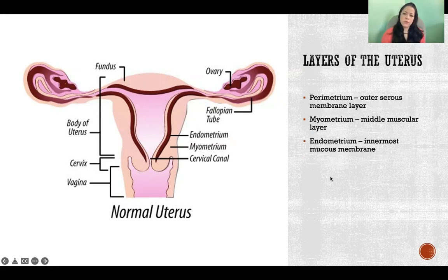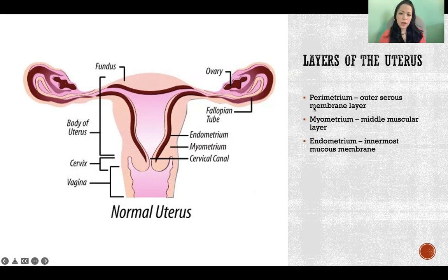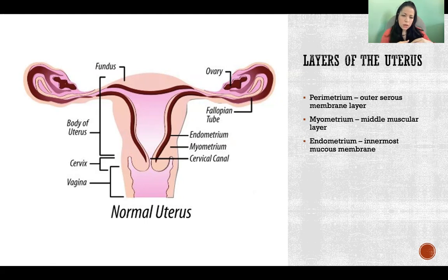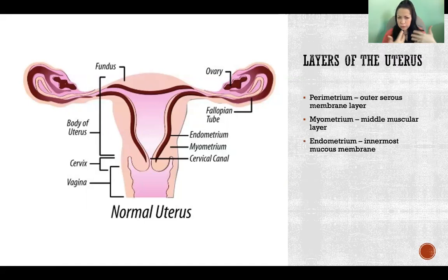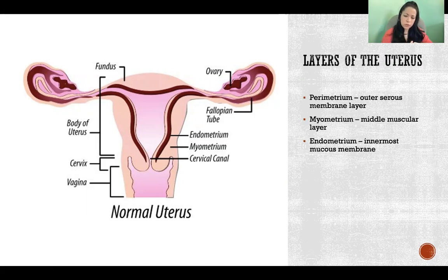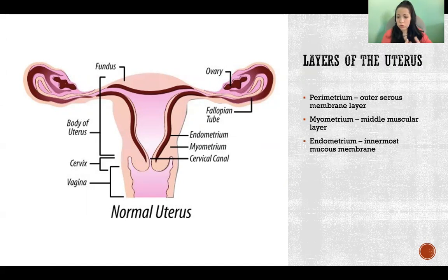The layers of the walls of the uterus: we have three layers. The parametrium — like 'perimeter' — that's the outside layer, the outer serous membrane layer. Most of our visceral organs have a serous membrane on the outside. It's like a mucus membrane, but the fluid is more slippery and less sticky because the purpose is to reduce friction. We secrete this slippery fluid so that when another organ rubs against the uterus, we're not creating friction and there's no injury.